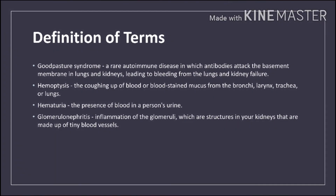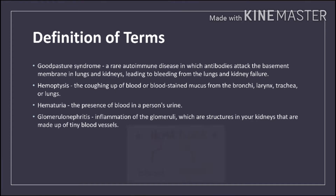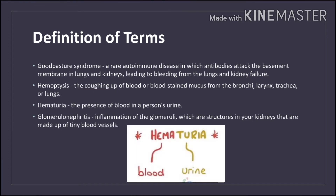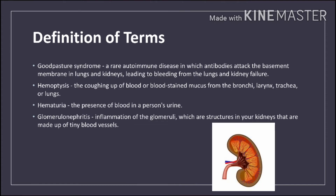Definition of Terms. Goodpasture Syndrome is a rare autoimmune disease in which antibodies attack the basement membrane in the lungs and kidneys, leading to bleeding from the lungs and kidney failure. Hemoptysis is the coughing up of blood or blood-stained mucus from the bronchi, larynx, trachea, or lungs. Hematuria is the presence of blood in a person's urine. Glomerulonephritis is inflammation of the glomeruli, which are structures in the kidneys made up of tiny blood vessels.